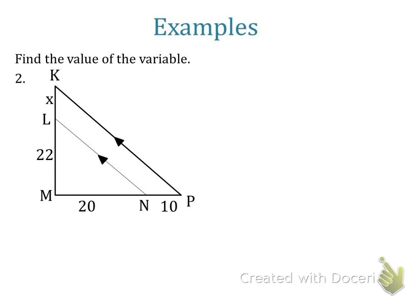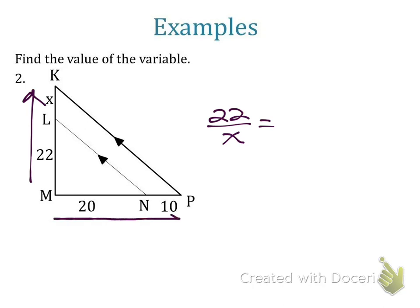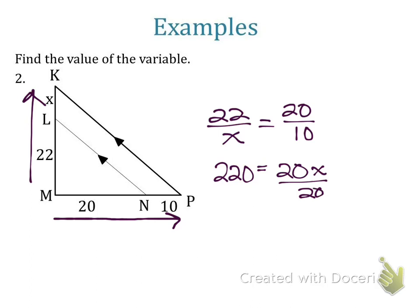For the next example, going from the smaller triangle to the trapezoid: 22 to X needs to equal a piece from the small triangle to the trapezoid, which is 20 to 10. We cross multiply and divide. After dividing both sides by 20, X is 11.